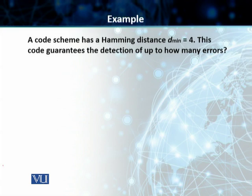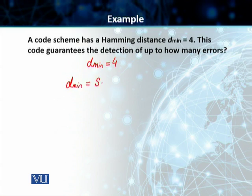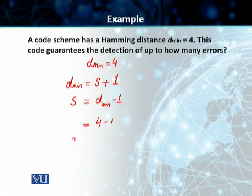In this example, as you can see, we have a coding scheme that has a minimum Hamming distance of 4, and we need to know how many errors this code can detect. What's given is d_min = 4. We know that d_min equals the number of detectable errors plus 1, so s is equal to d_min minus 1, which is 4 minus 1, giving us s = 3.